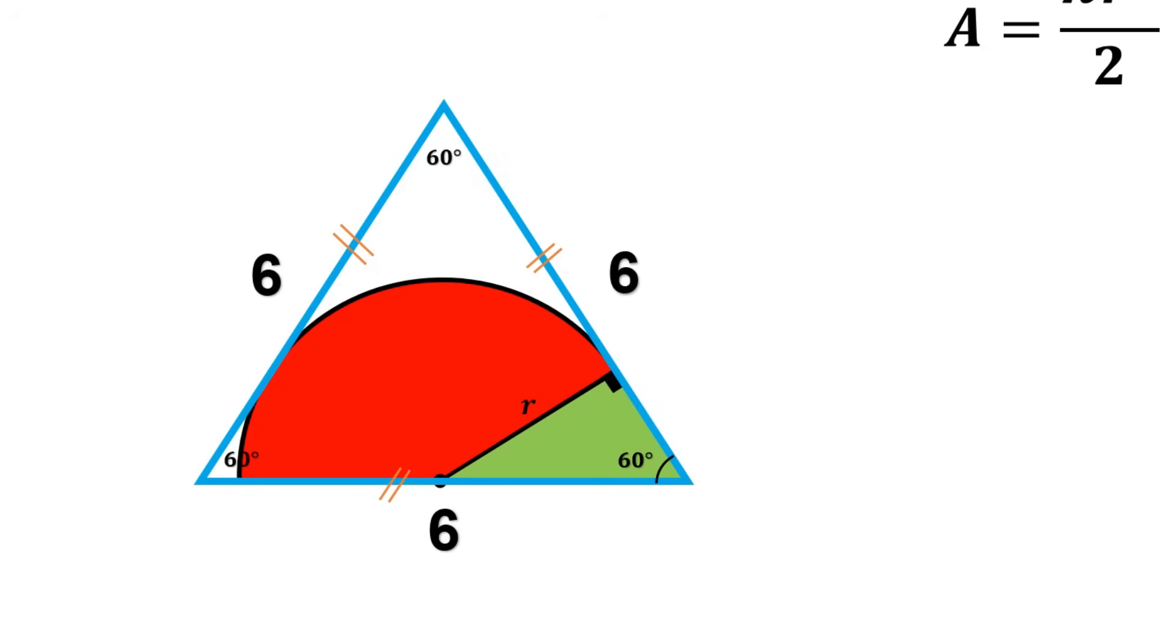We're getting close. The length of this entire side is 6. Half of it is 3. This segment of length 3 becomes the hypotenuse of our small right triangle.